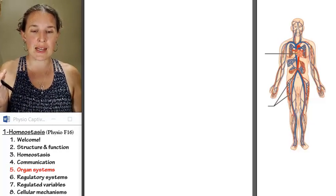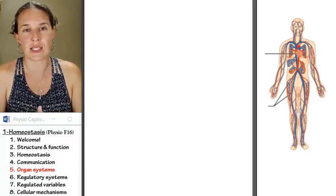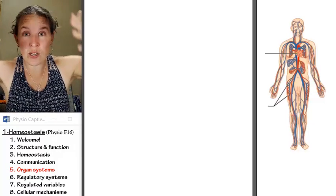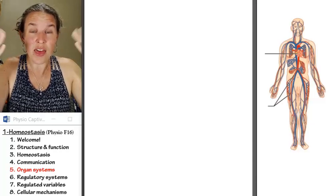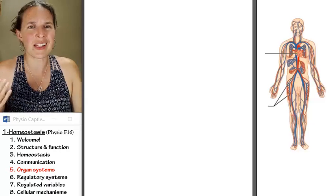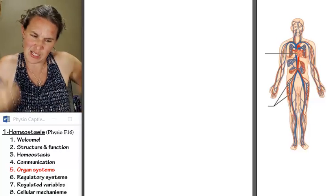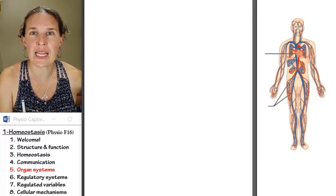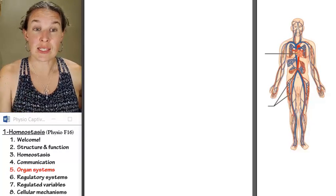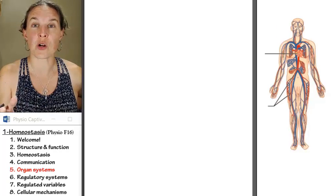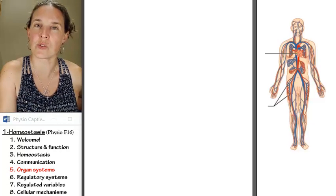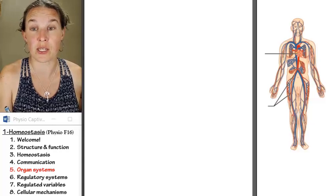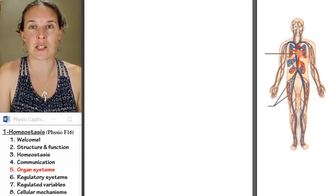We're going to look at specific roles of organ systems related to homeostasis. Not everything that an organ system does is homeostatic — there are things organ systems do that have nothing to do with homeostasis. Homeostasis must be related to the extracellular fluid. In this class, you'll have an integration project where one piece is how your chosen topic relates to homeostasis, so you have to choose a topic that relates to the extracellular fluid.